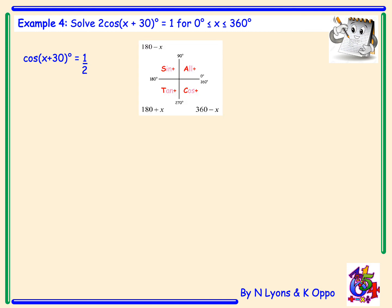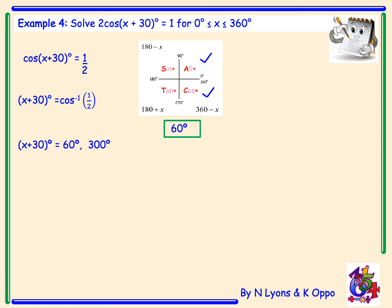We draw the CAST diagram; since cos equals positive one half, we tick where cos is positive — the first and fourth quadrants. We find inverse cos of one half, which is 60 degrees. Therefore the angle in the first quadrant is 60 degrees and the angle in the fourth quadrant is 360 minus 60, which is 300 degrees.